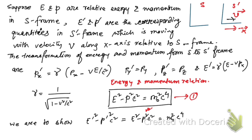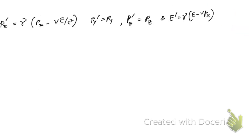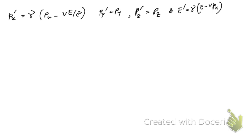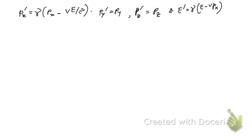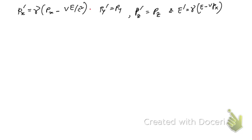This expression is invariant under Lorentz transformation, and both sides equal m₀²c⁴, since we know that E² minus p²c² equals m₀²c⁴ — the energy-momentum relation. Let me call this equation number one.